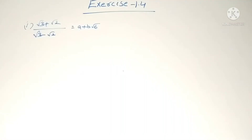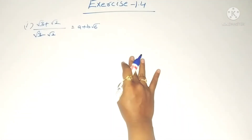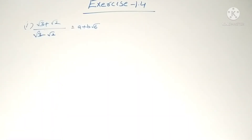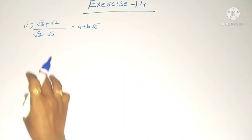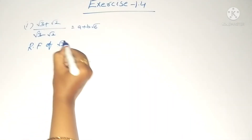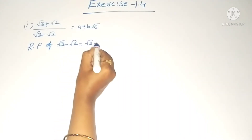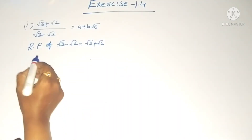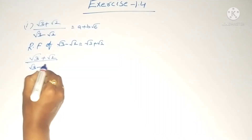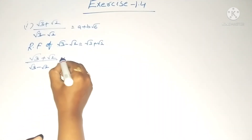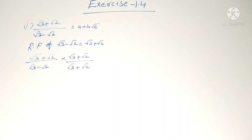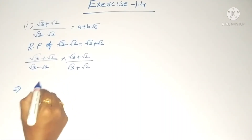By rationalizing the denominator we can simplify this. What is in the denominator? √3 minus √2. So the rationalizing factor of √3 − √2 is √3 + √2. We have to multiply both numerator and denominator with √3 + √2.